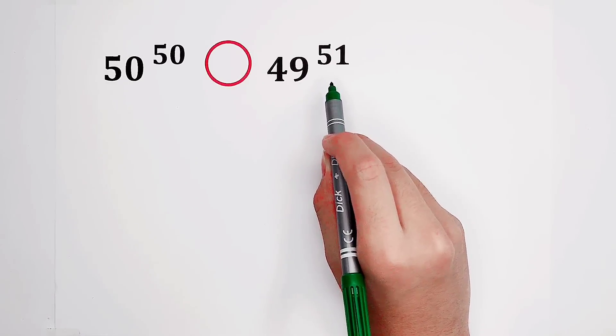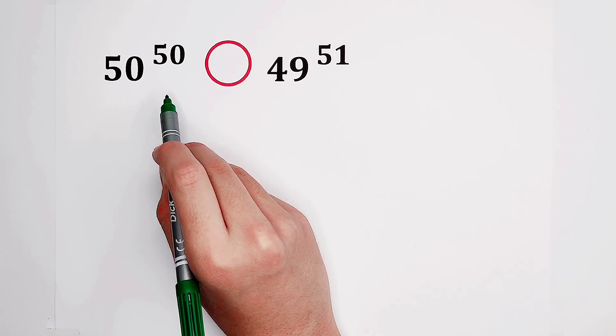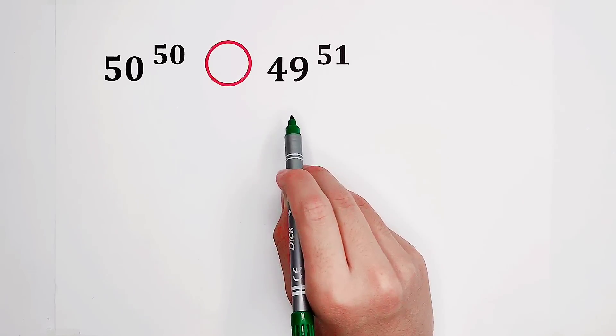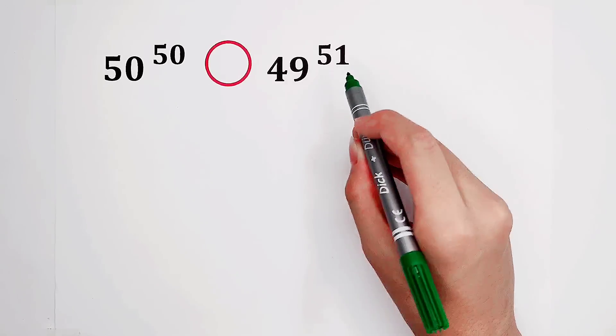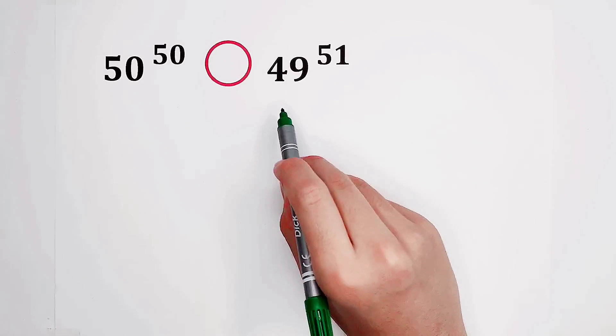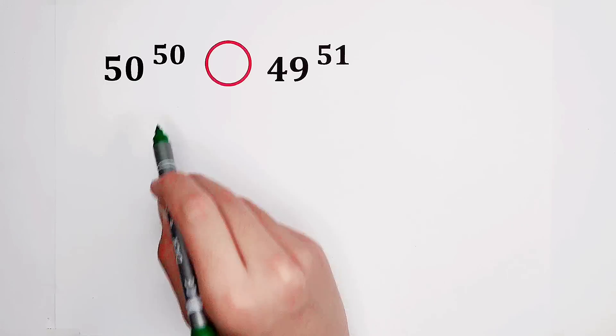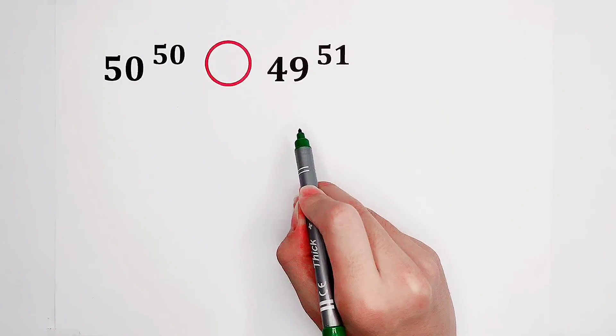Look, the left-hand side: 50 is the base, 50 is the exponent as well. The right-hand side has base 49 and exponent 51. Notice that 49 plus 1 is 50, and 51 minus 1 is 50. Exponential forms.